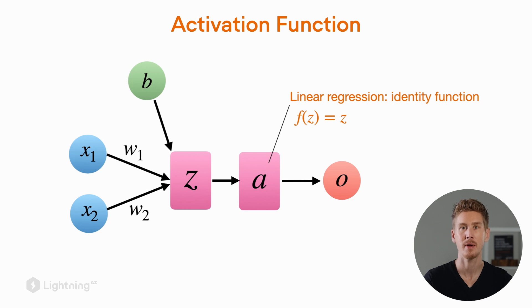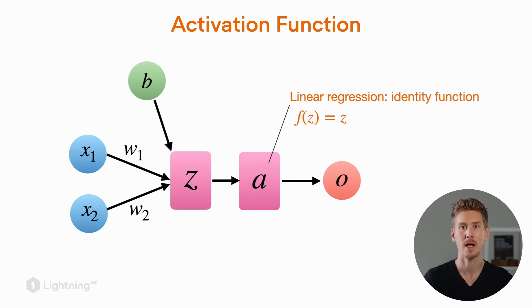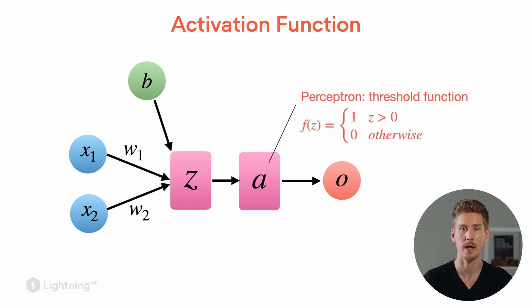To finish up this discussion of activation functions: in linear regression, the activation function is an identity function, which is essentially a placeholder that returns the input value z unchanged. This is included so you can see how linear regression relates to other single layer neural networks like logistic regression and the perceptron. In the case of the perceptron, the activation function is a threshold function that returns class label 1 if the weighted sum is greater than 0, and class label 0 otherwise.